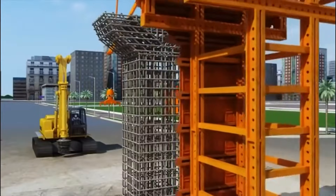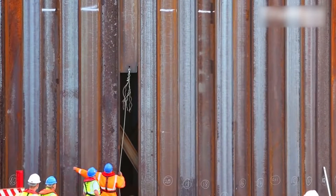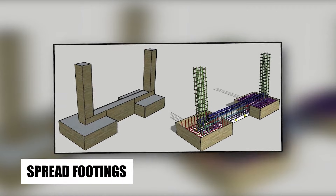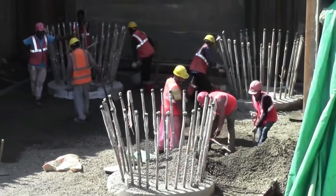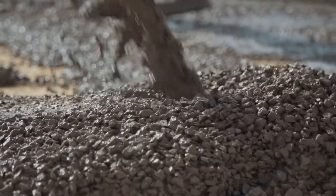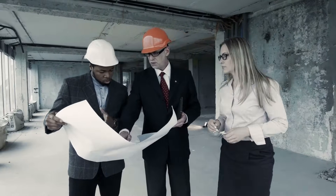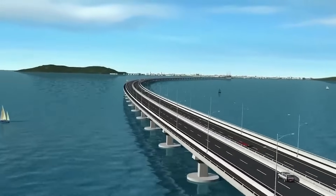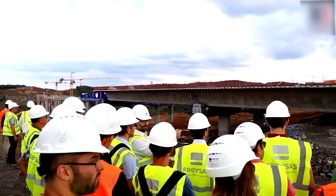Caisson foundations are similar to pile foundations, but involve the use of a large, watertight box that is sunk into the ground. The caisson is then filled with concrete to create a solid base for the bridge. Spread footings are typically used for smaller bridges and involve the excavation of a shallow trench that is filled with concrete. The bridge columns are then anchored to the concrete footing to provide stability and support. Overall, building a foundation for a bridge is a complex process that requires careful planning and execution, and must be constructed to exacting standards to ensure that the finished product is safe and durable.